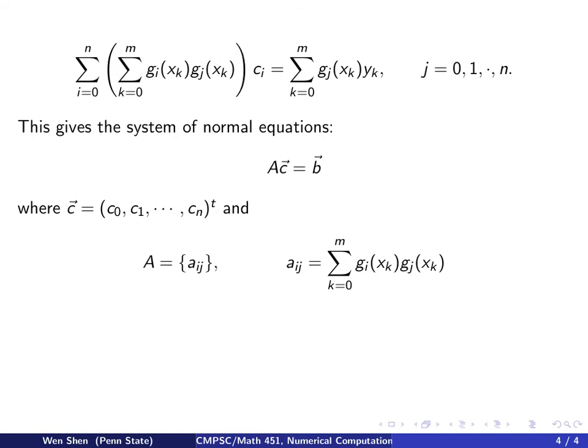Let's write each element as a_ij. The value of a_ij is exactly this expression, the thing in front of c_i for equation j. It's the sum of g_i times g_j evaluated at x_k. The b is the right-hand side vector, so b_j equals that.